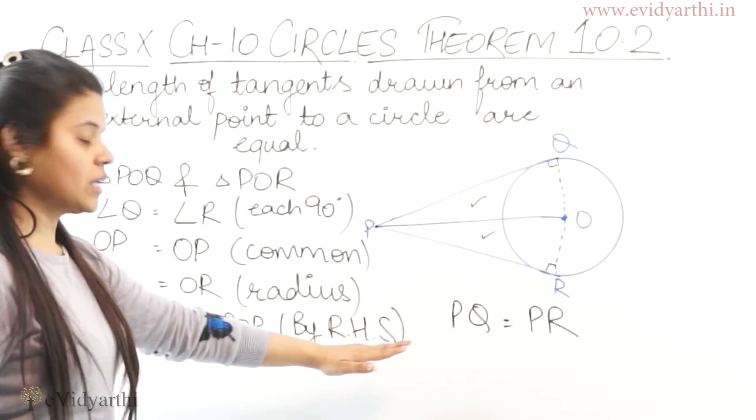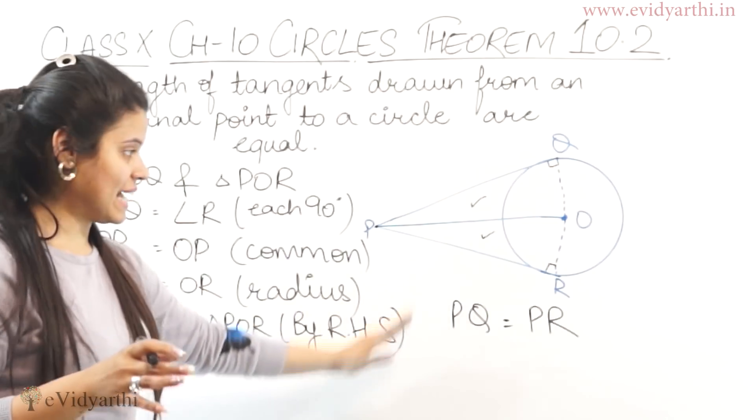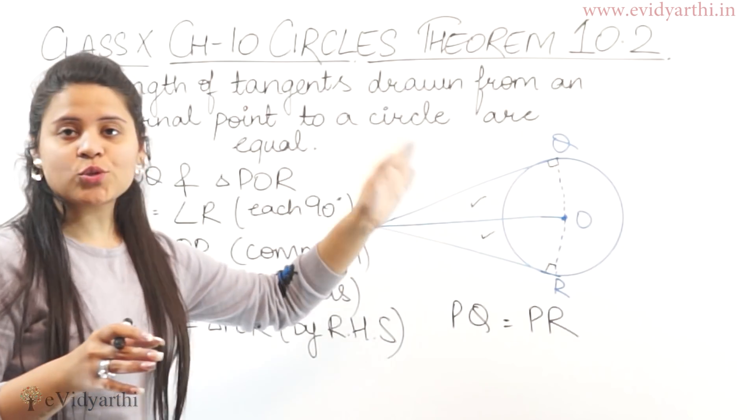This will be by RHS. RHS means right angle triangle, hypotenuse and one side. So side will be OQ or OR, hypotenuse will be OP.